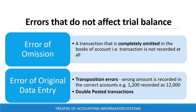Error of omission occurs when a transaction is completely omitted from the books of accounts — that is, the transaction is not recorded at all. Error of original entry occurs due to either transposition errors — that is, recording wrong amounts, such as 12,000 instead of 1,200 — or double posting of a transaction.